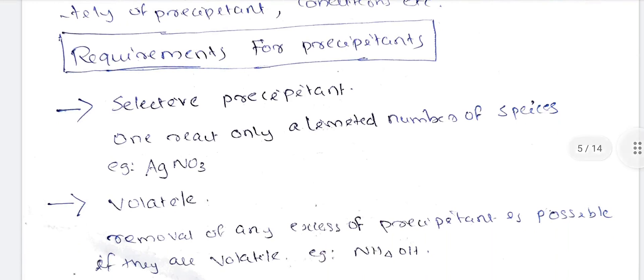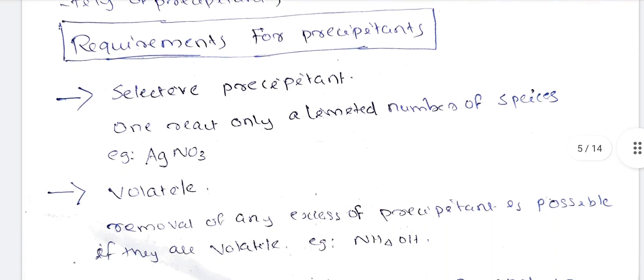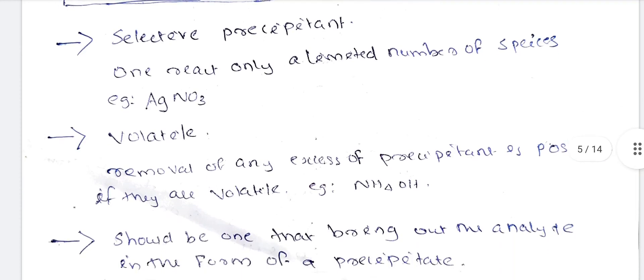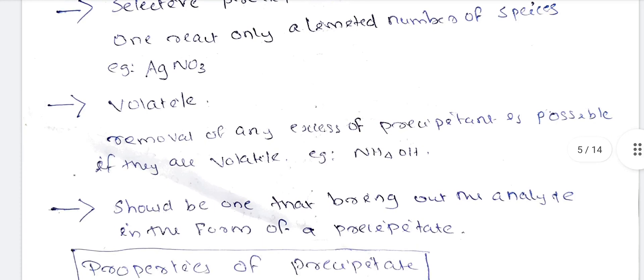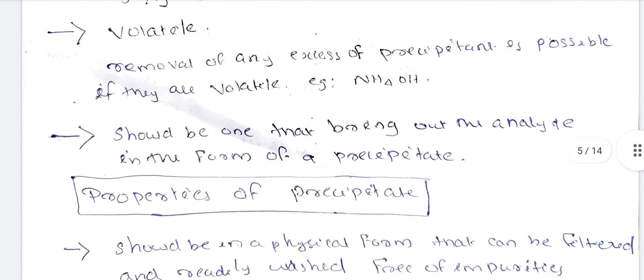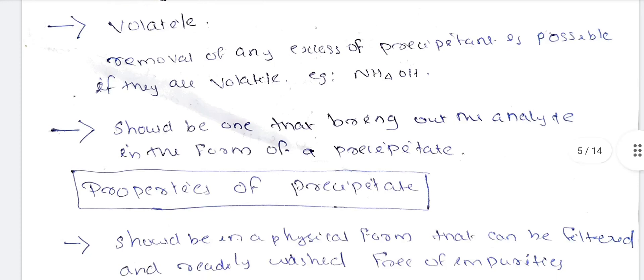Requirements for precipitants: First, selective precipitants — they react with only a limited number of species. Example: AgNO3. Second, the precipitant should be volatile, so that removal of any excess of precipitant is possible. Third, it should be one that brings out the analyte in the form of a precipitate.